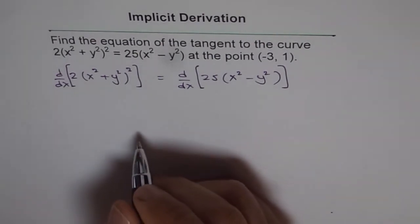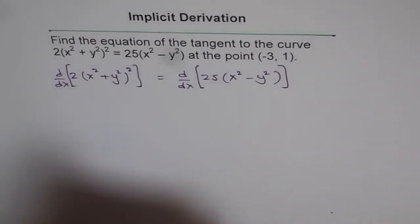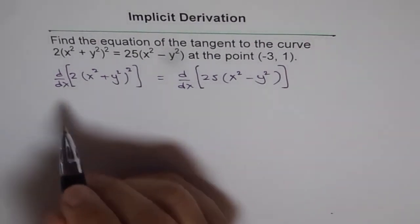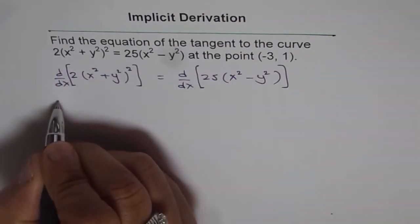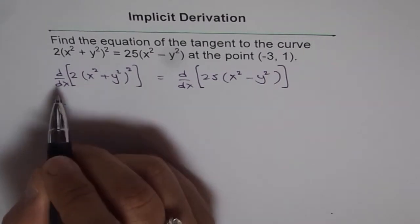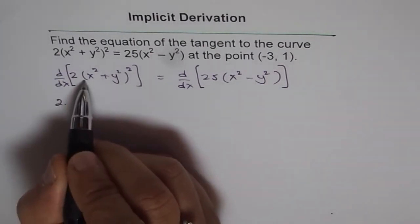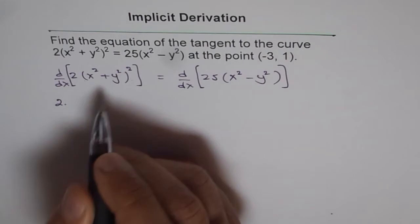Now, I'll do a shortcut and won't go through all the steps here and write down the derivative. This 2 is a constant, so we can take 2 outside.